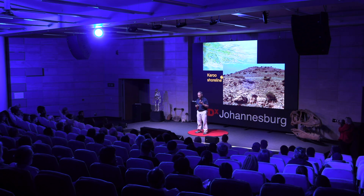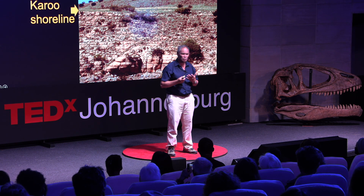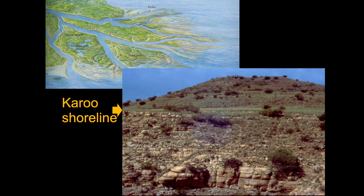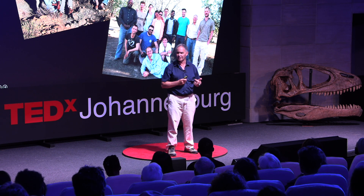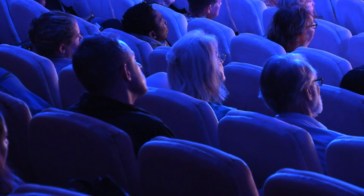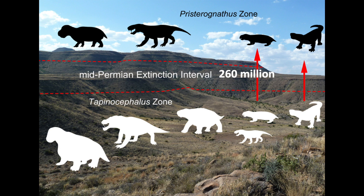We also studied the rocks themselves. Geologists can determine the environment in which rocks were deposited, and we discovered the shoreline of the ancient Karoo sea and were able to map it out. The rocks represent a deltaic environment, and as soon as we hit the shoreline, that's where we started finding fossils of these early animals. The project expanded to involve many more people from around the world and students from South Africa, looking at rock dating, climatic change through paleosols and stable isotopes.